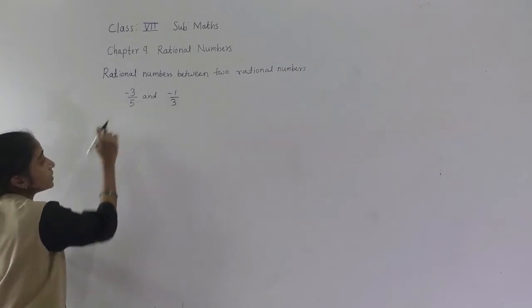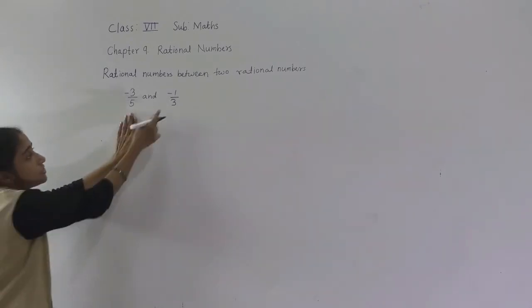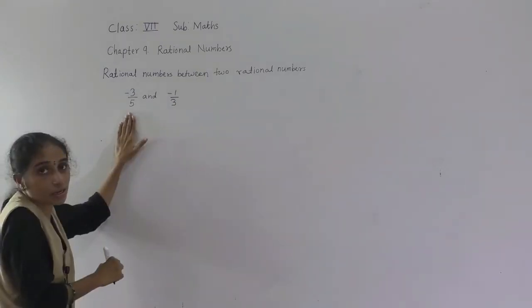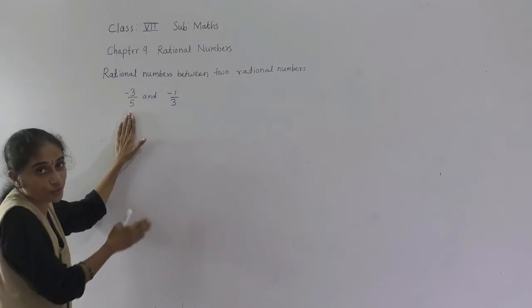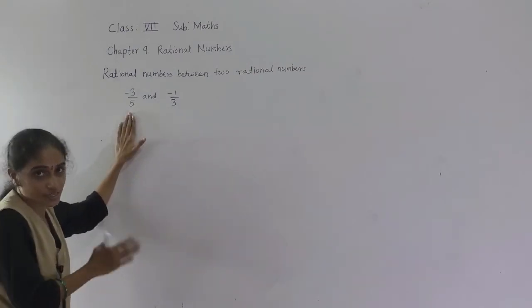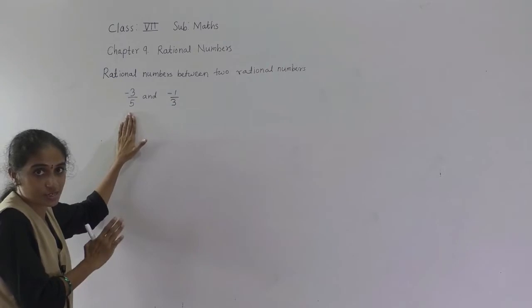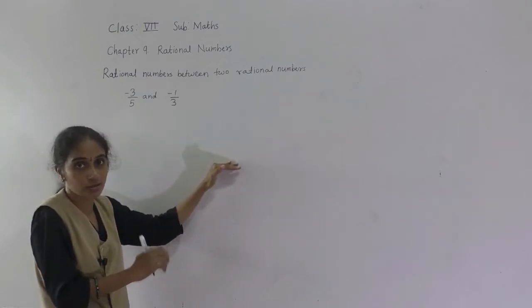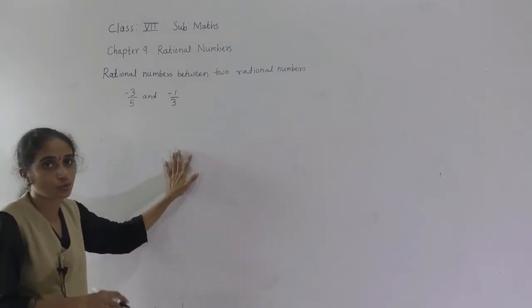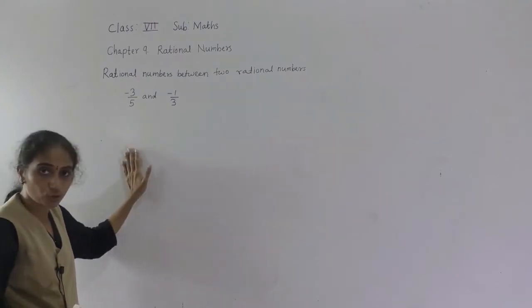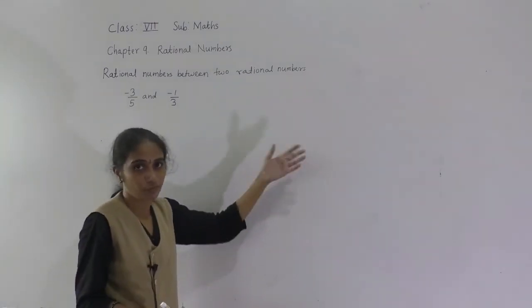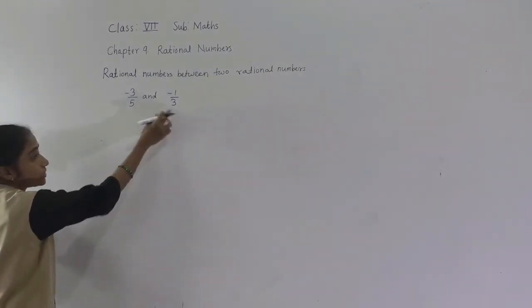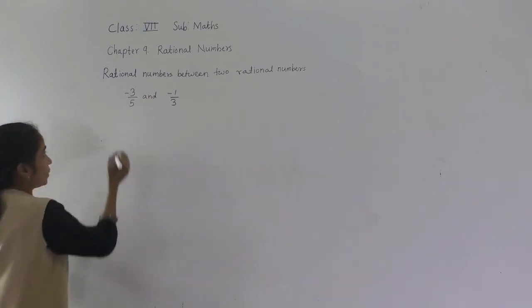The greatest denominator is 5. Is 5 in the 3 times table? No. Is 10? No. Is 15? Yes. So 15 is the LCM of 3 and 5. We need to make both denominators equal to 15.